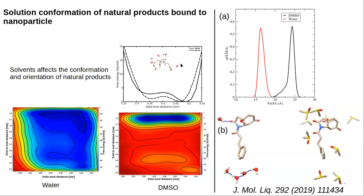We were then interested in understanding the conformational fluctuations of the molecule inside the nanoparticle, and found that the solvent again plays an important role. This molecule in the presence of water may exist in two or three conformational states, where we track the end-to-end distance and the keto-enol distance. It could be exhibiting a bent conformation with the keto oxygen pointing in and out. In DMSO there is different behavior — we observe only two conformational states compared to water.